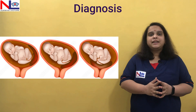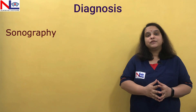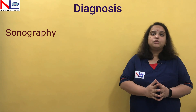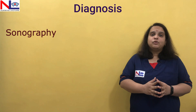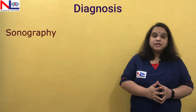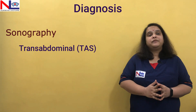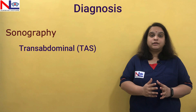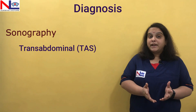If we are suspecting placenta previa, we will never put any fingers in the vagina because that may cause torrential hemorrhage. So the best investigation of choice is transabdominal or transvaginal sonography — sonography is the best method to identify the condition. However, with transabdominal sonography, sometimes we cannot reach a conclusion, especially in obese women.